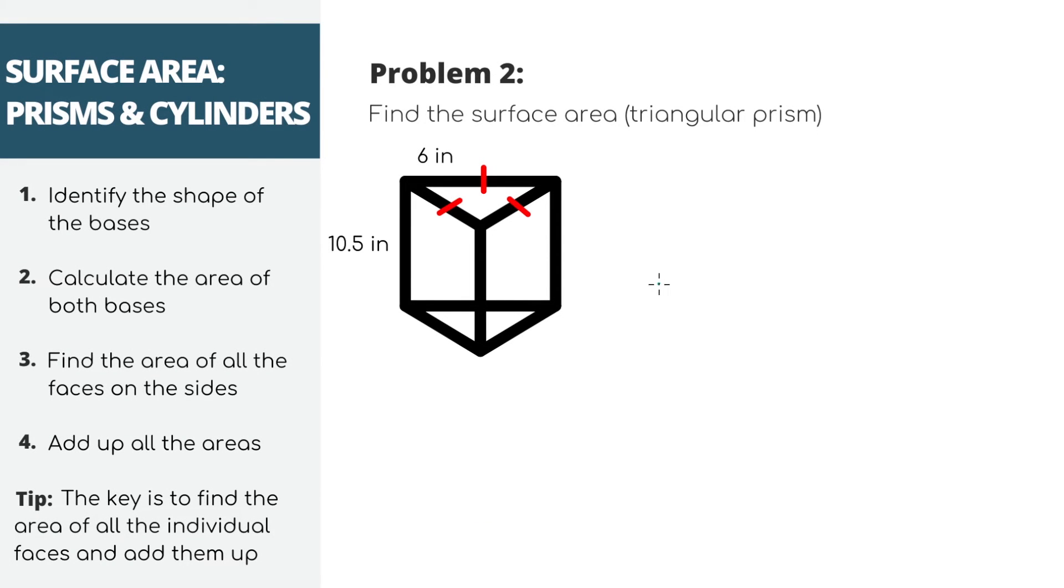For our next problem, we're going to do the same exact thing. We're going to first identify the shape of the base. So you know how in the last problem the bases were rectangles? Now we have, you guessed it, triangles for bases. And these red lines indicate that each side length on the triangles are the same length. If it's hard to visualize, this base looks just like this if you view the prism from the top. And each side length is 6 inches.